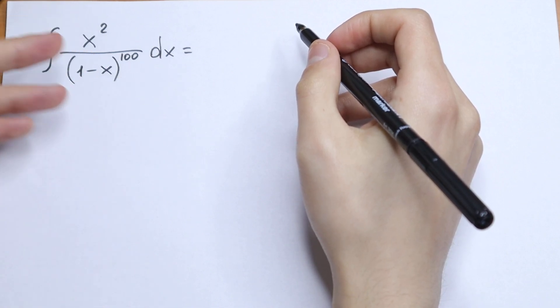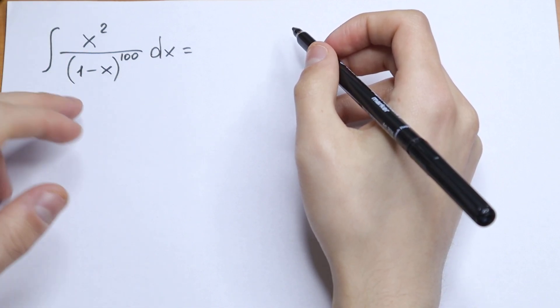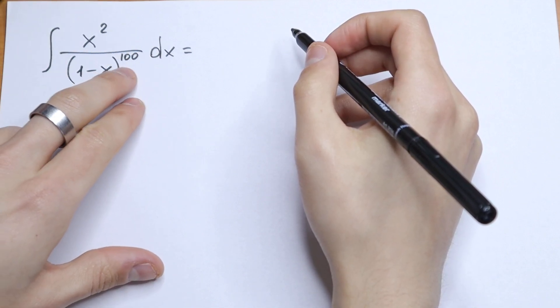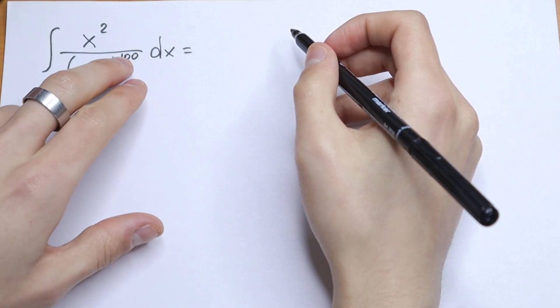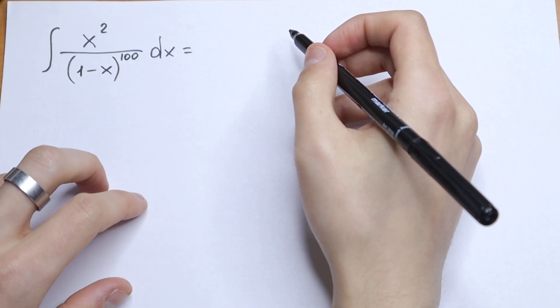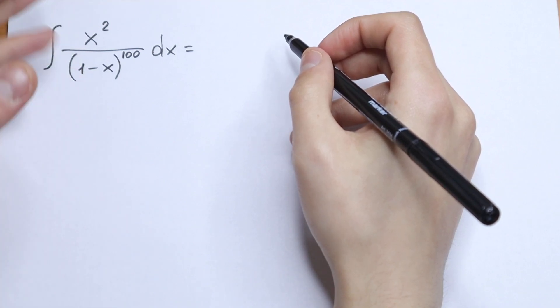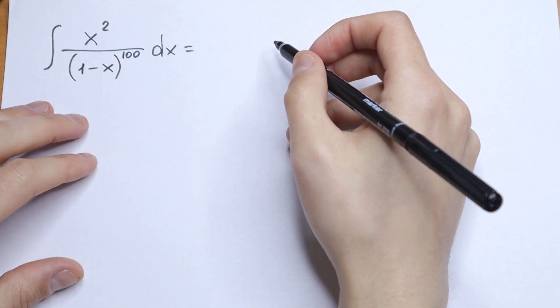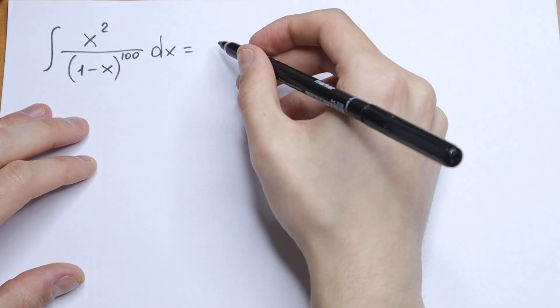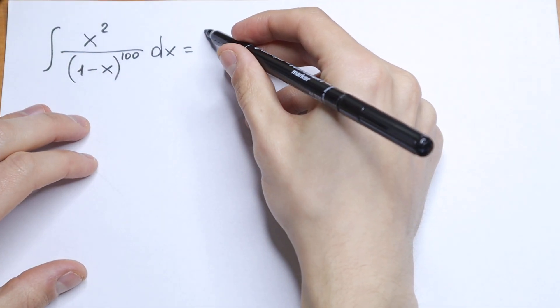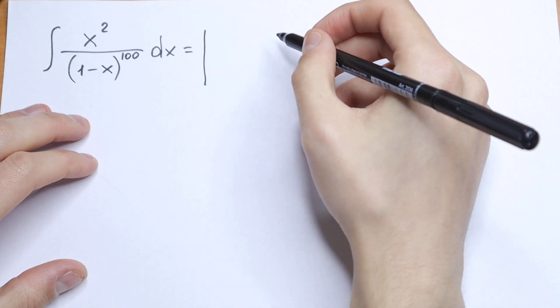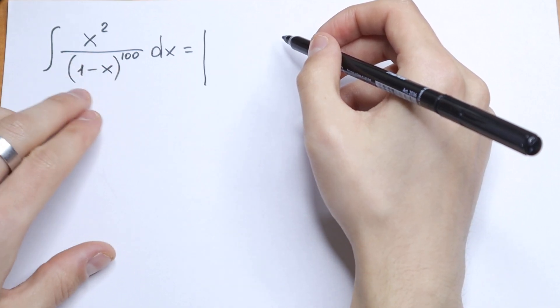On the first glance, this integral is really hard because we have a huge power — we have 100 in the power — we have a denominator, we have a fraction. So what do I recommend to do in this case? Let's make a substitution.